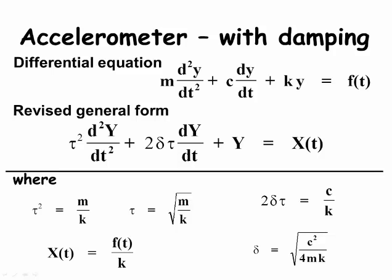Tau squared is the accelerometer mass m divided by the spring constant k. The term 2 times delta times tau equals c over k, which is used to define delta. After substituting in for tau, we find that delta equals the square root of c squared over 4mk. The generalized forcing function x(t) is defined as f(t) over k. These equations give physical meaning to tau and delta for the general second-order equation, though this physical meaning is only relevant to accelerometers. For other second-order processes, we will not have terms corresponding to m, k, or c.